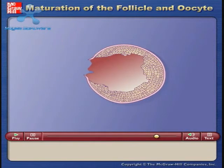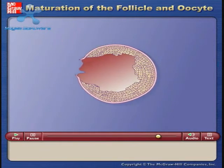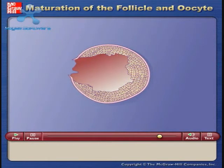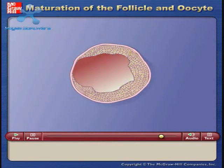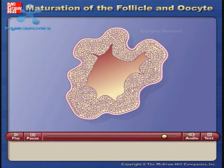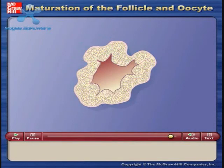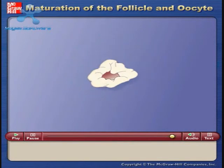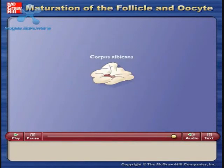Following ovulation, the granulosa cells divide rapidly and enlarge to form the yellow corpus luteum. When the corpus luteum degenerates, it forms the white corpus albicans.